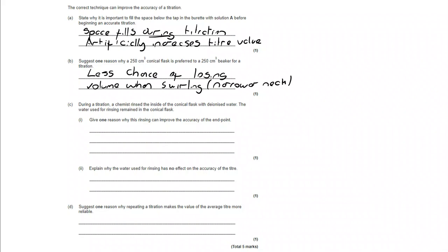Moving on to part C. During the titration, a chemist rinsed the inside of the conical flask with deionized water. The water used for rinsing remained in that conical flask. Why can that improve the accuracy of the end point? Well, what we're looking for here is the fact that when you transfer solution into a conical flask, some of it can stay in droplets on the side. It means that it's not down there reacting with what's coming out of the burette.